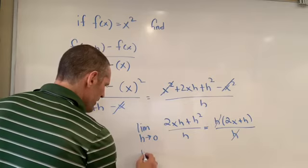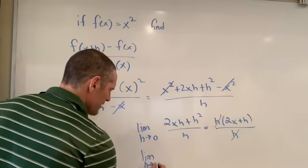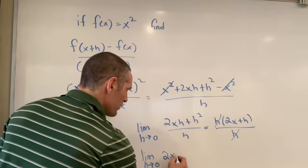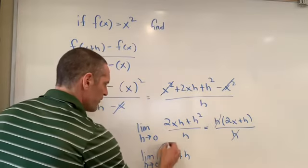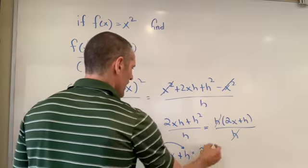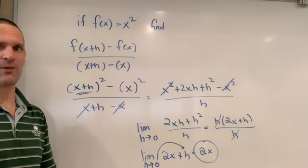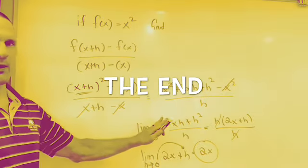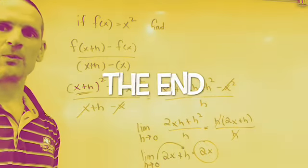Cancel, cancel. So, if we take the limit as h approaches 0 of this function, which is the surviving function 2x plus h, notice if I do the direct substitution now, I'm simply left with 2x. And that is our derivative from first principles, or using the difference quotient. We don't know that yet, but mechanically, that's what we're doing.